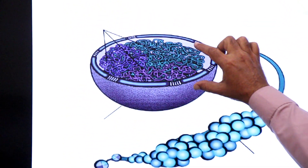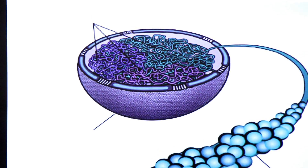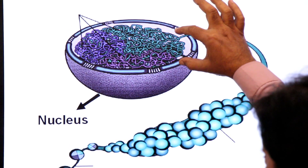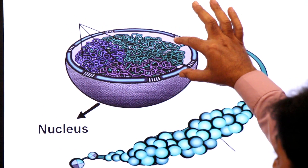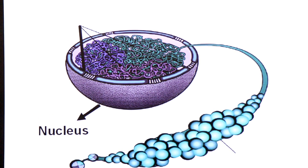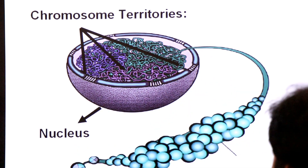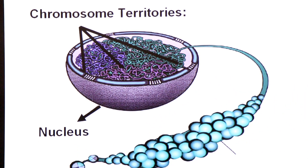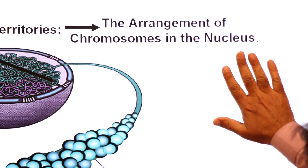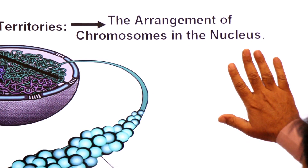This is the entire collection of DNA in the nucleus. In human cell nuclei, chromosomes are arranged in specific regions. The arrangement of chromosomes in the nucleus is known as chromosome territories.